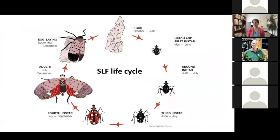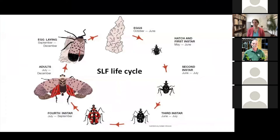The life cycle typically has one generation per year in cooler areas. They do not need cold temperatures — somebody bought a Christmas tree with a spotted lanternfly egg mass, took it into the house, and as it warmed up the eggs hatched. Right now, October through June, we have egg masses. The first three instars are black and white, the fourth instar turns red. Adults come out July through December, and egg laying occurs September through December or the first hard frost depending on location.